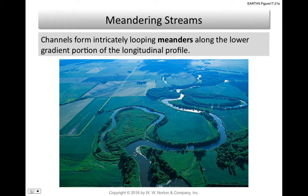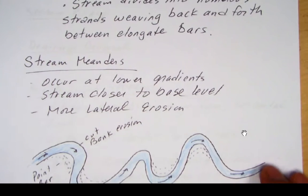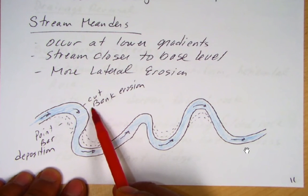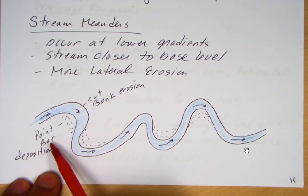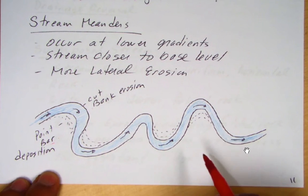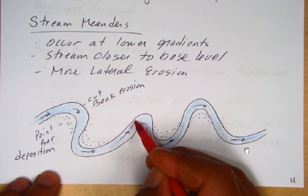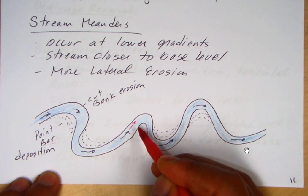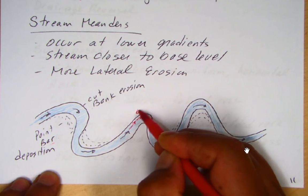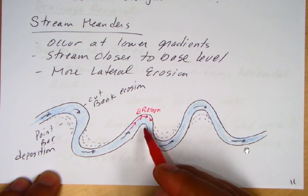You can see meander cutoff occurring right here. An important thing about stream meanders is there's a cut bank where there's erosion, and a point bar where there's deposition — the point bar is on the inside of the meander, the cut bank is on the outside. As water flows through, more energy — like being on the outside seat of a roller coaster — causes more erosion on the outside. So we see erosion at the cut bank and deposition at the point bar.